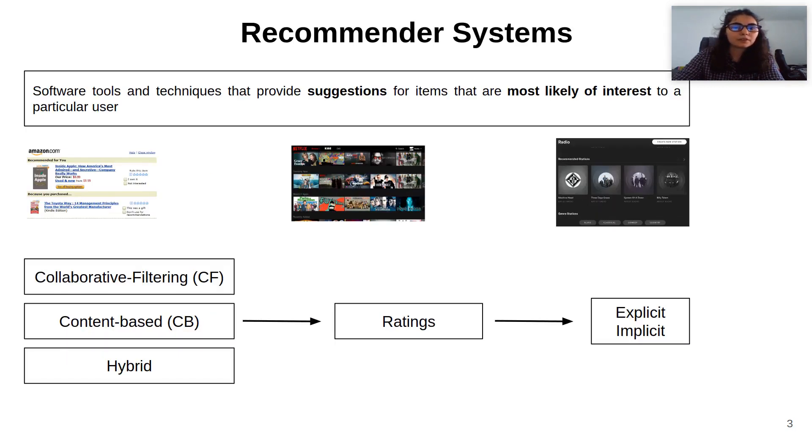Recommender systems are, by definition, software tools and techniques that provide suggestions for items that are most likely of interest to a particular user. These systems are widely used in platforms such as Amazon, Netflix, and Spotify.